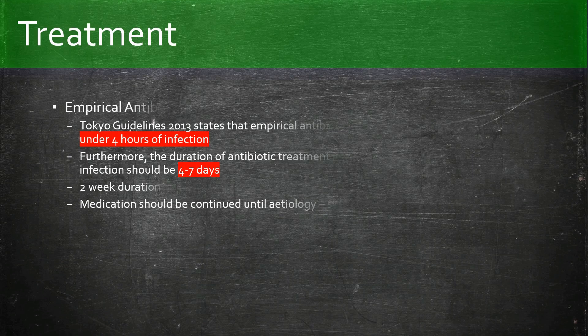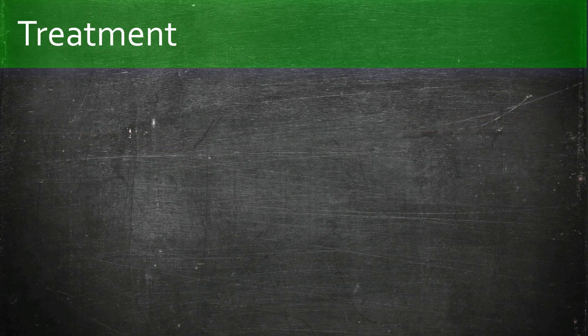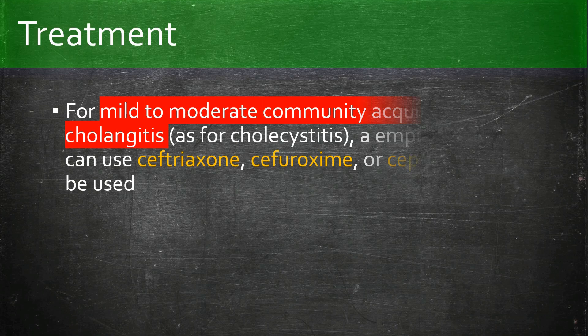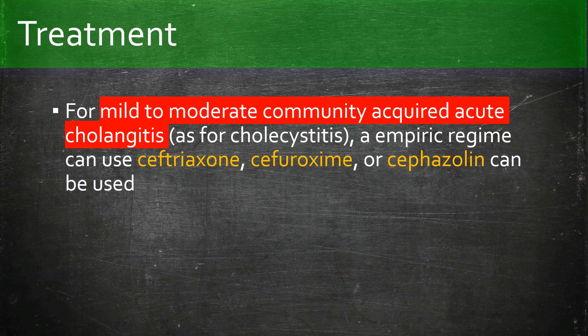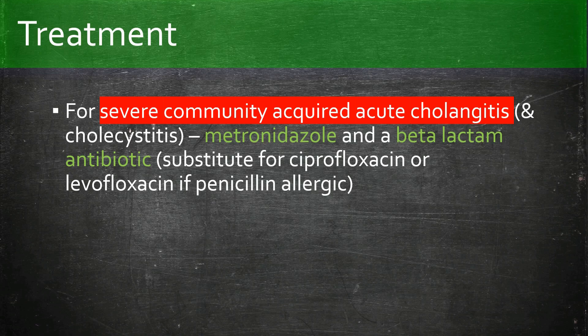Treatment of acute cholangitis is via empirical antibiotic therapy. Ideally, this should be commenced within four hours of infection, with duration of treatment between four to seven days, extended to two weeks if the patient is positive for bacteremia. Antibiotics for mild to moderate community-acquired acute cholangitis include ceftriaxone, cefuroxime, or cefazolin. Severe acute cholangitis requires metronidazole and a beta-lactam antibiotic, which can be replaced with ciprofloxacin or levofloxacin if penicillin allergic.